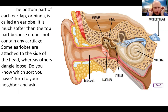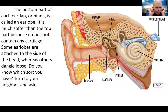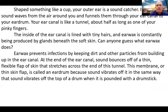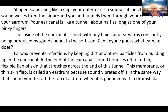Some earlobes are attached to the side of the head, whereas others dangle loose — that's sort of a genetic thing. Do you know which sort you have? Turn to your neighbor and ask; they can see your ear without looking in a mirror. Shaped something like a cup, your outer ear is a sound catcher. It collects sound waves from the air around you and funnels them through your ear canal to your eardrum.